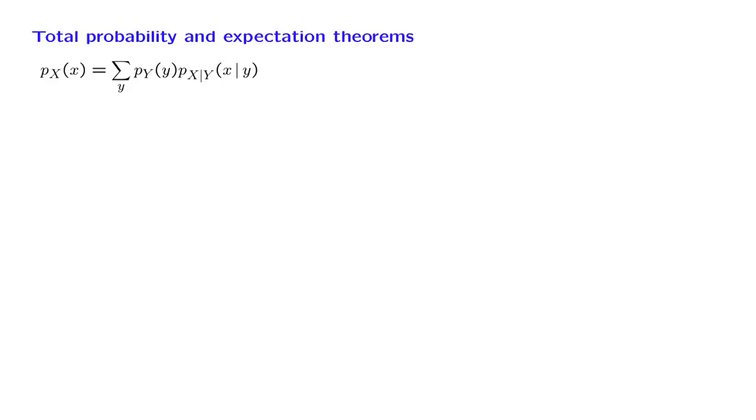For example, we have seen this version of the total probability theorem. There is a continuous analog in which we replace sums by integrals and we replace PMFs by PDFs. The proof of this fact is actually pretty simple.